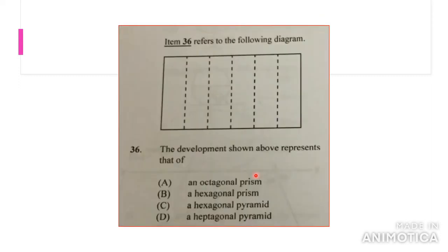The development shown above represents that of what? Pretend this is a flat piece of paper. The hidden lines show where the paper will bend, and these two ends will come together. It would be a polygon because the polygon has different sides. How many sides does this have? One, two, three, four, five, six. That is a hexagon. The bottom is flat and the top is flat, so it cannot be a pyramid. The answer would have to be a hexagonal prism.